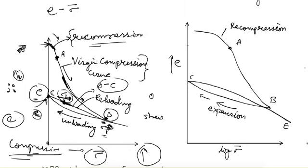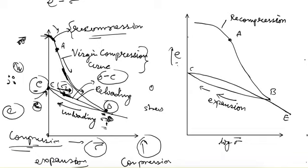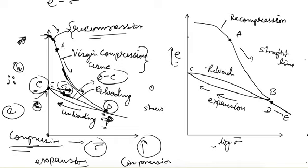When the same plot is made between e and log sigma instead of sigma, the AB part of the curve becomes a straight line. Similarly, the DE part is also a straight line. The AB part is the virgin compression, BC is the expansion, and CB (or CD) is the reloading or recompression part.